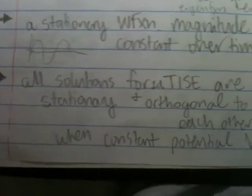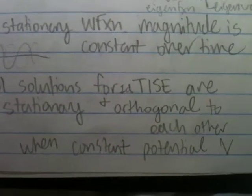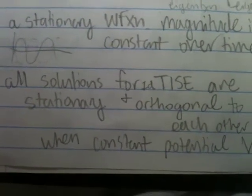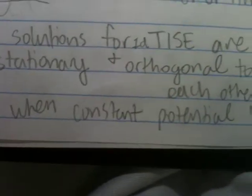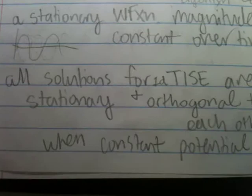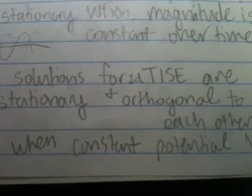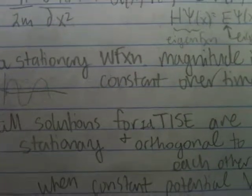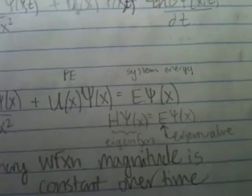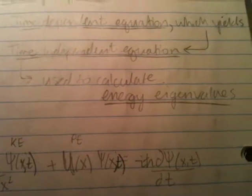And finally, all solutions for one-dimensional time-independent Schrödinger equations are stationary and orthogonal to each other for a constant potential. It means that when you're solving the TISE to get some sort of energy eigenvalue, those solutions are going to be stationary and orthogonal.